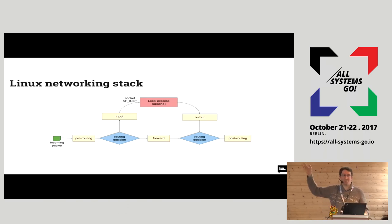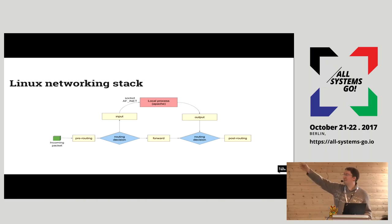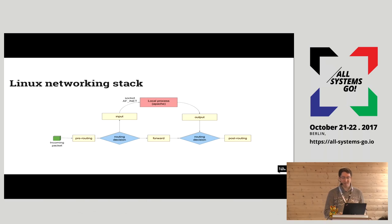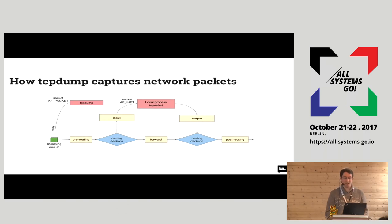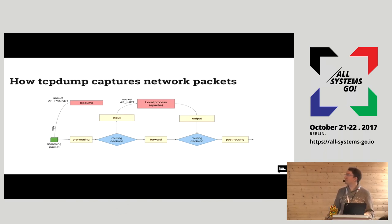Maybe you have already seen a schema like this about the Linux networking stack. It shows an incoming packet on the network interface, and then Linux will route it — maybe to a different machine or to a local process. In this example, Apache has a socket receiving packets on port 80. tcpdump intercepts packets very early in the network stack, making a copy of all incoming packets before any routing decision has been made.